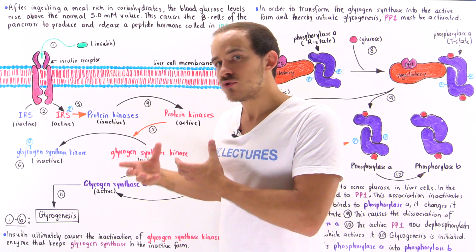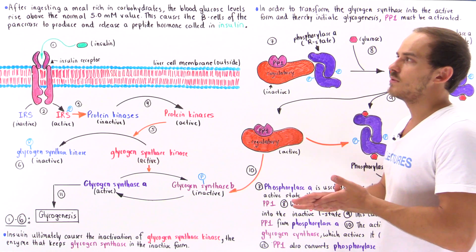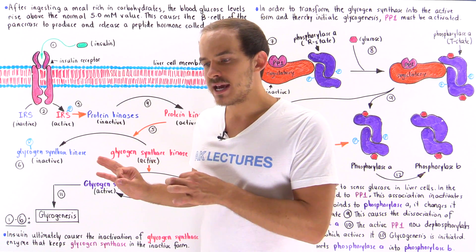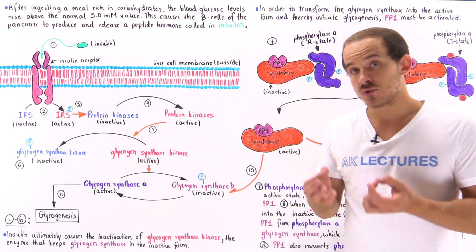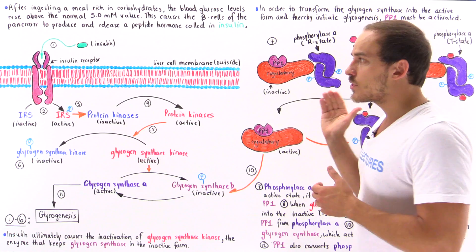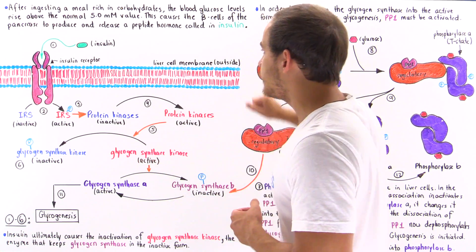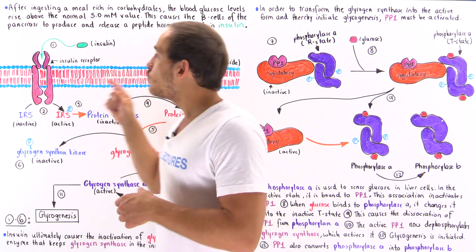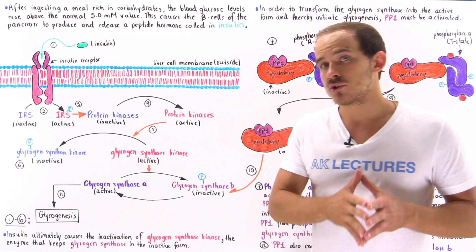What our liver cells will try to do is maintain the proper level of glucose in our blood, and they will uptake that glucose into the cell. What will also happen is the beta cells of the pancreas will begin to produce and secrete a small peptide hormone known as insulin. Insulin will travel through the bloodstream and eventually make its way onto a special receptor protein found on the membrane of liver cells known as the insulin receptor. Once insulin binds onto the insulin receptor, that initiates a signal transduction pathway.